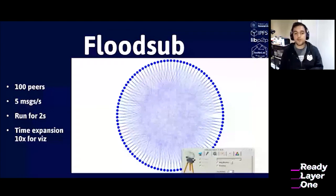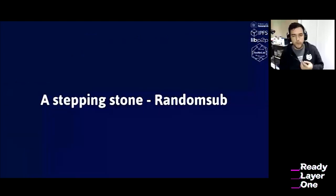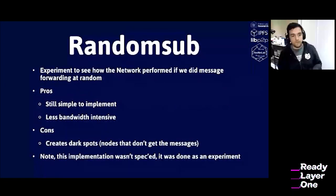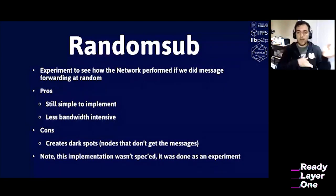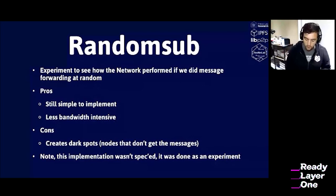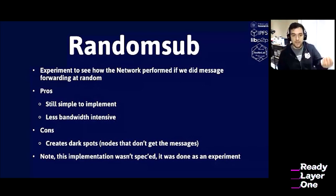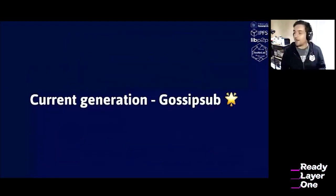The next PubSub router we implemented — we don't talk a lot about it, it was really an experiment — was RandomSub. RandomSub takes inspiration from FloodSub but rather than picking every single path to send the message, it picks some paths at random. It was less bandwidth intensive, but as you may be guessing, it creates dark spots: because you're picking some paths at random, there might be nodes that never receive the message because their path never gets picked. So we knew we needed something better — something that picked the best from FloodSub but didn't use as much bandwidth.